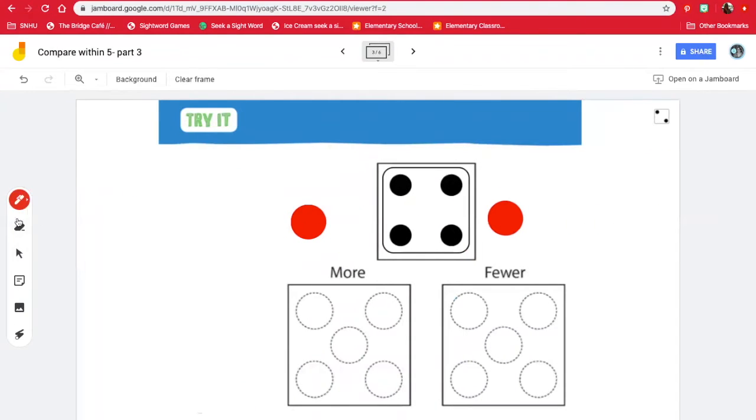All right, here we have a dice and we need to show what's more and what's fewer than the dice at the top. So how many do we have? One, two, three, four.